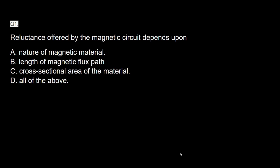What is reluctance? Reluctance is a property of the material and is analogous to resistance in the electric circuit. The question is: reluctance offered by a magnetic circuit depends upon — the nature of the magnetic material, the length of the magnetic flux path, the cross-sectional area of the material, or all of the above? The answer is: all of the above.